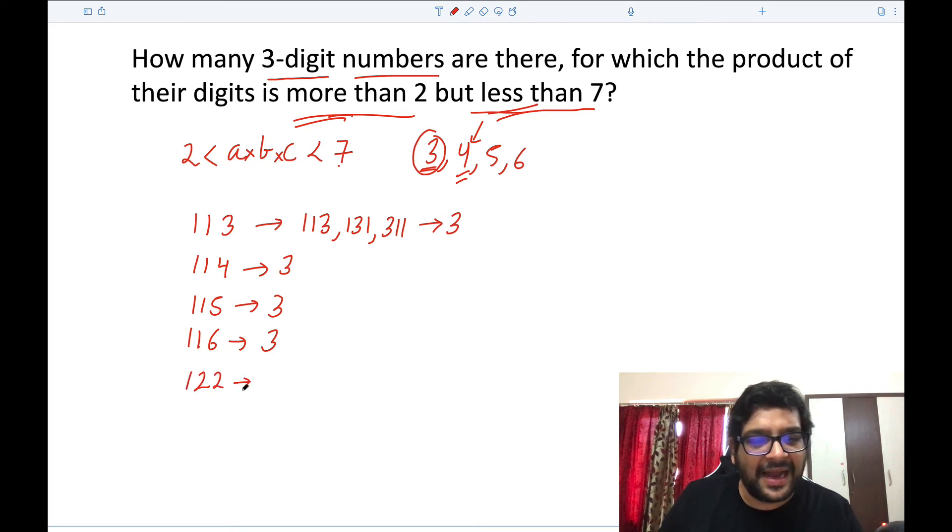You can do one times two times two, and now one times two times two can also be rearranged how? 122, 212, and 221. So this can also be rearranged in three ways. What about five? Can you manufacture five any other way? You can't. What about six? Yes you can. One times two times three is actually six, and this can be rearranged in how many ways?